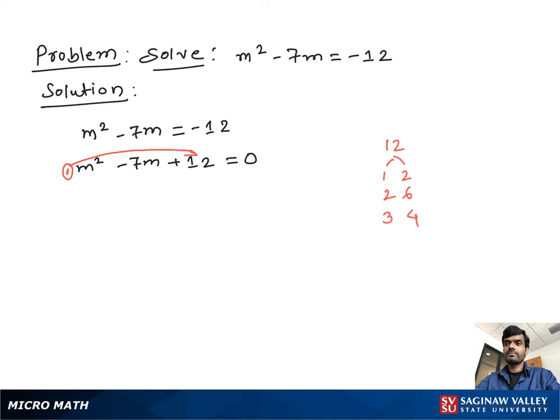Now we find a pair of numbers which multiply to give us positive 12 and add to give us negative 7. And that number is 3 and 4. If we put negative signs in front of 3 and 4, we get 12 on multiplication and negative 7 on addition.